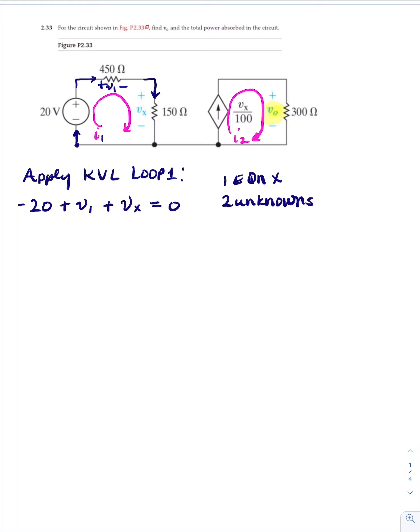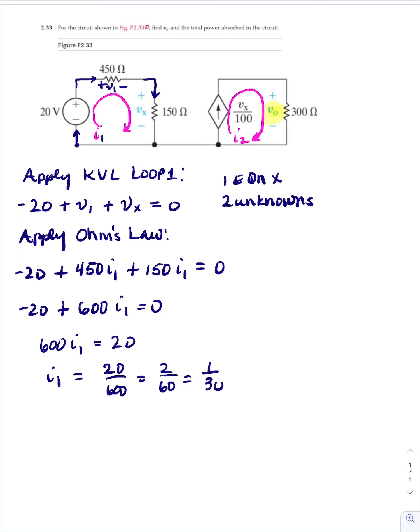We rewrite this. We have minus 20, and V sub one is the current times the resistance, so it's 450 I sub one. V sub X is 150 I sub one. Now we can solve for I sub one. Minus 20 plus 600 I sub one equals zero. 600 I sub one equals 20. I sub one equals 20 divided by 600, which is 1 over 30. So I sub one equals 0.033 amps.